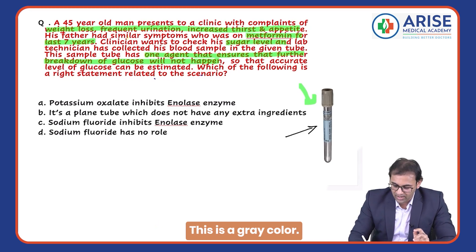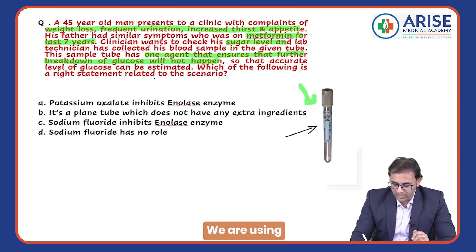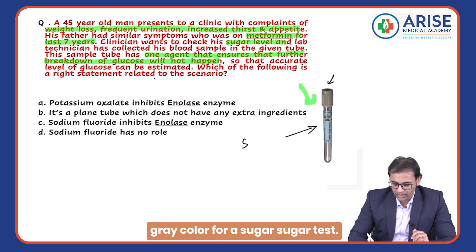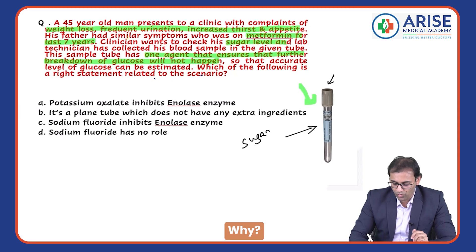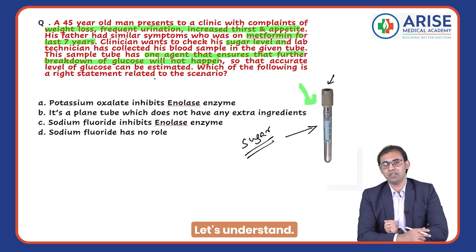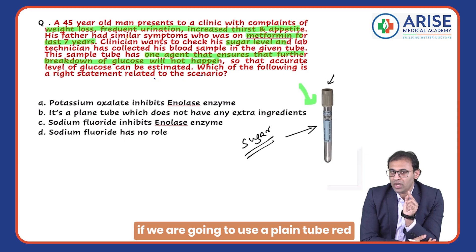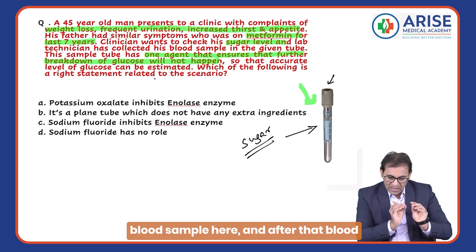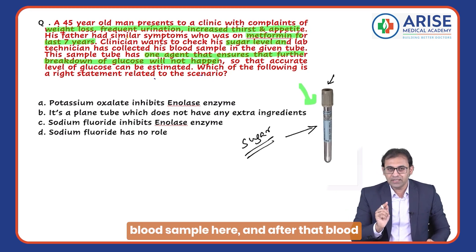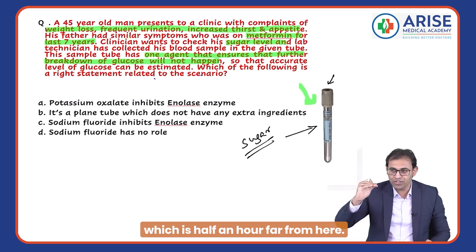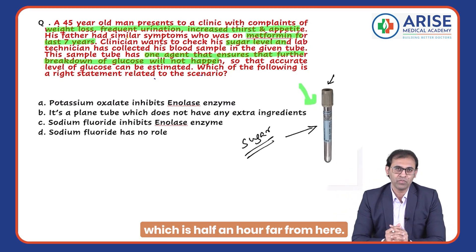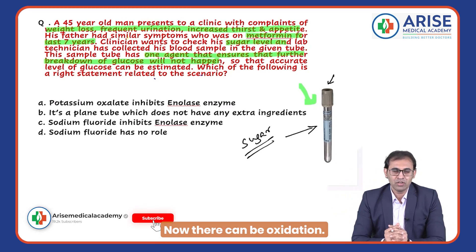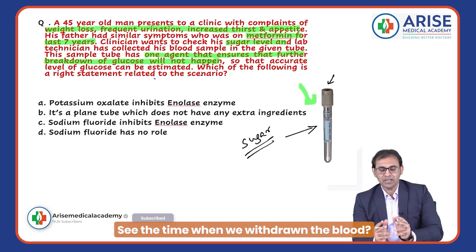We are using a gray color tube for sugar testing. To understand why, suppose we use a plain red color tube with no special ingredient and collect the blood sample there. If that sample is then sent to a lab half an hour away, there can be oxidation.